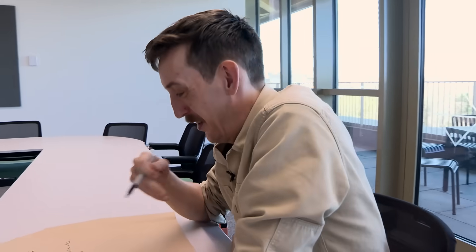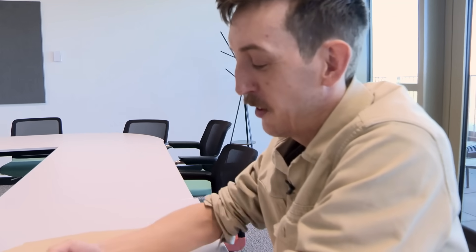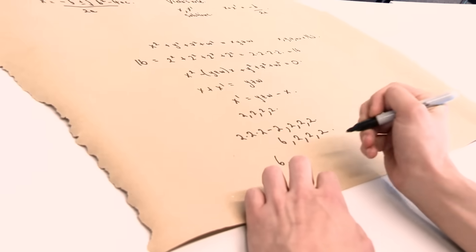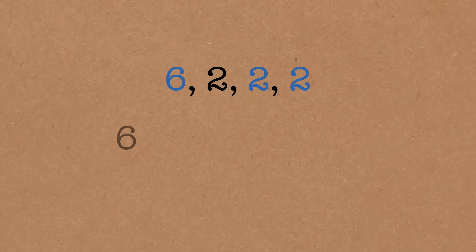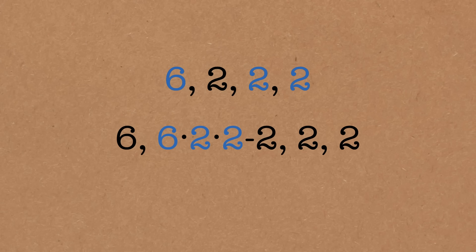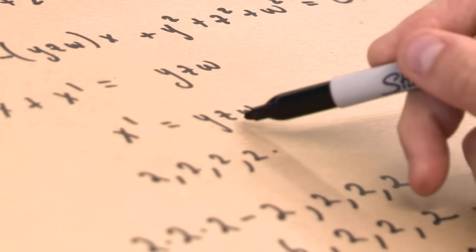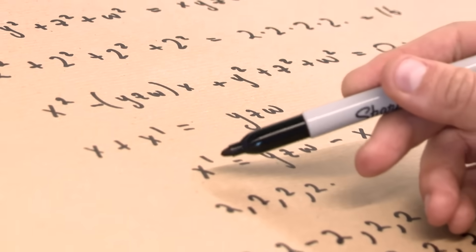Now that I've found the new solution, I can transform another coordinate by the same rule. The rule is always: the product of the other three minus this variable. So it's 6 times 2 times 2 minus 2, which is 6 times 4 minus 2, so 24 minus 2 equals 22. We get (6, 22, 2, 2). And we should notice: we keep getting integer solutions — we always have whole numbers. If y, z, w and x are whole numbers, this will also be a whole number. No fractions or any bothersome things like that.